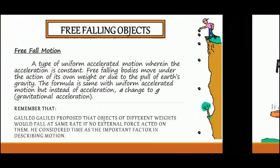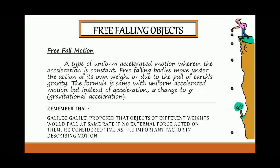Free-fall motion is a type of uniformly accelerated motion wherein the acceleration is constant. Free-falling bodies move under the action of their own weight, or due to the pull of Earth's gravity. The formula is the same as uniform accelerated motion, but instead of acceleration 'a', it changes to 'g' or gravitational acceleration.